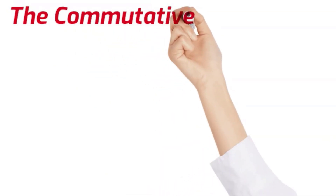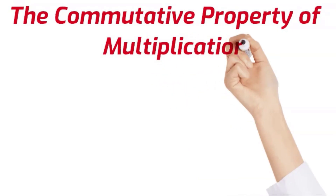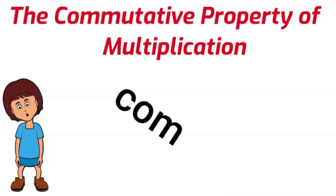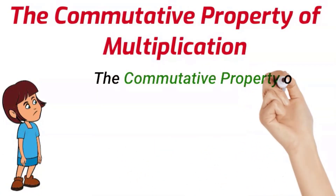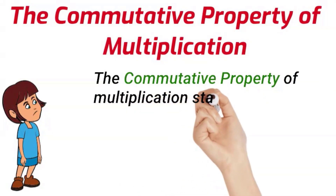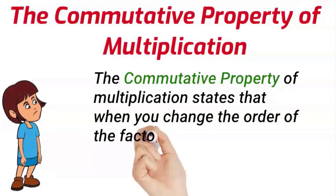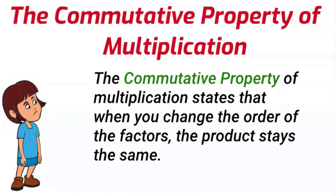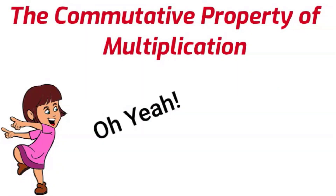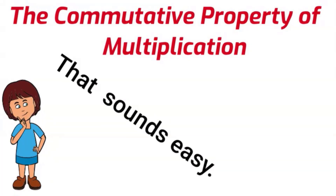Welcome to today's lesson — we will be exploring the commutative property of multiplication. The commutative property of multiplication simply states that when you change the order of the factors, the product will still be the same.